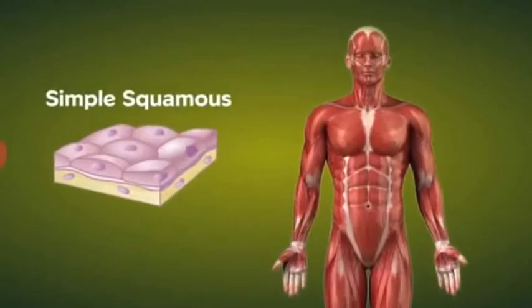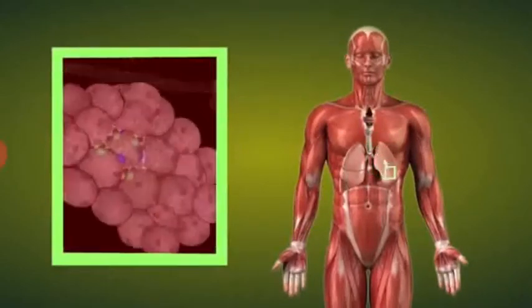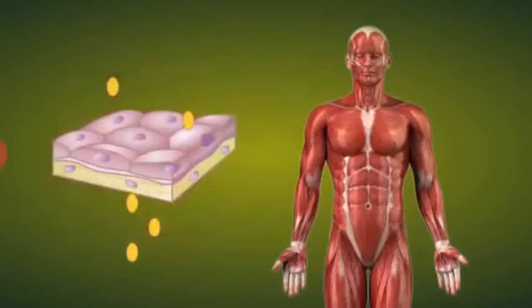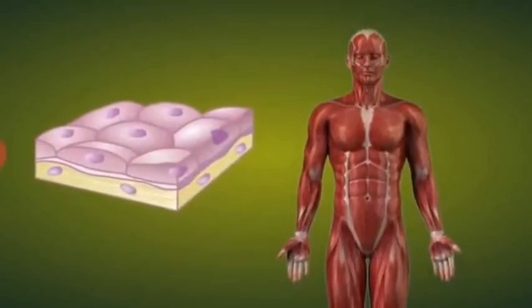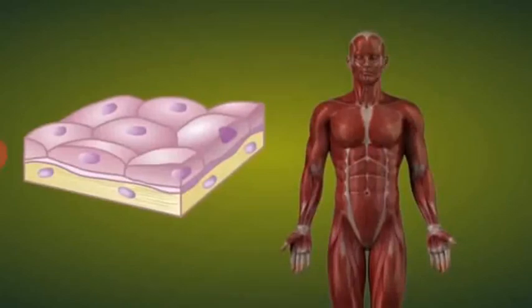The simple squamous epithelium is found in the lining of the alveoli and allows transport of small molecules across the membrane. It is extremely thin, flat, and single-layered.